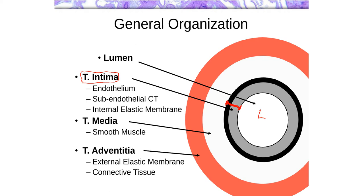Especially in arteries, we are likely to see something called the internal elastic membrane. In arteries, it has a fairly thick layer of elastic fibers — actually a sheet of elastic fibers, not individual fibers — with small pores within it to allow for diffusion of oxygen from the lumen. These three layers together make up the layer known as the tunica intima.